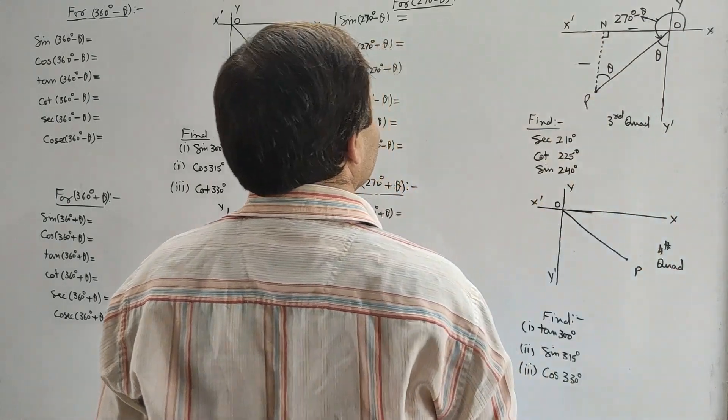For minus θ, the perpendicular PN is negative while base ON is positive. For angle θ, perpendicular and base are the same, because the magnitude of the angle is θ. With sign of rotation, it is minus θ. So for both θ and minus θ, perpendicular and base are the same, meaning there is no interchange of perpendicular and base. Therefore there is no interchange of sin into cos, cos into sin, tan into cot, cot into tan, and so on.